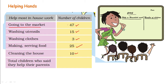Now we can add the children. How can we add easily? Just make pairs. 47 plus 3 is 50. 15 plus 25 is 40, and 10 is here. So 40 and 10 is 50, and 50 plus 50 is 100. So the total number of children who said they are helping in some way or other is 100.